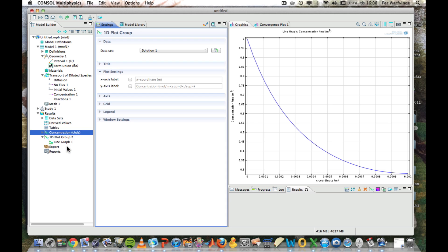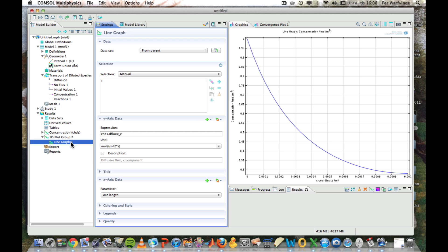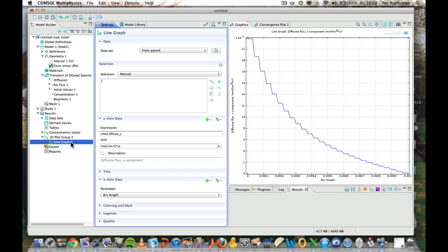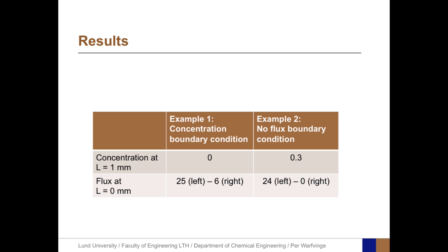And we go to our predefined flux plot, and we see that the flux to the left is about 24, and the flux to the right is, of course, 0, since it's a solid wall to the right.